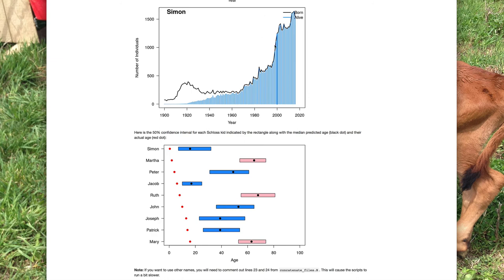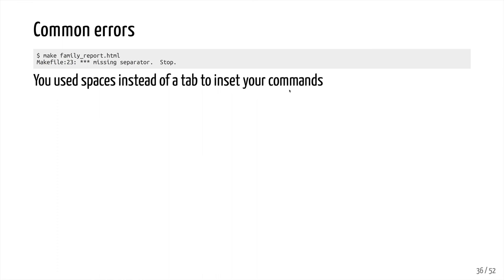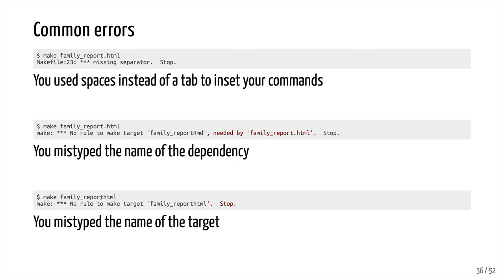Some common errors we see frequently: if you get this error that says 'makefile *** missing separator stop,' this is generally because you used spaces instead of a tab key to indent your commands. Replace those spaces with a single tab and you should be good to go. You might get an error that says 'no rule to make target family_report_RMD' — note it's missing a period — 'needed by family_report.html stop.' This generally means that you mistyped the name of the dependency. You might also get 'no rule to make target family_report_html stop' — missing a period — meaning you mistyped the name of the target or the rule doesn't exist in the make file.